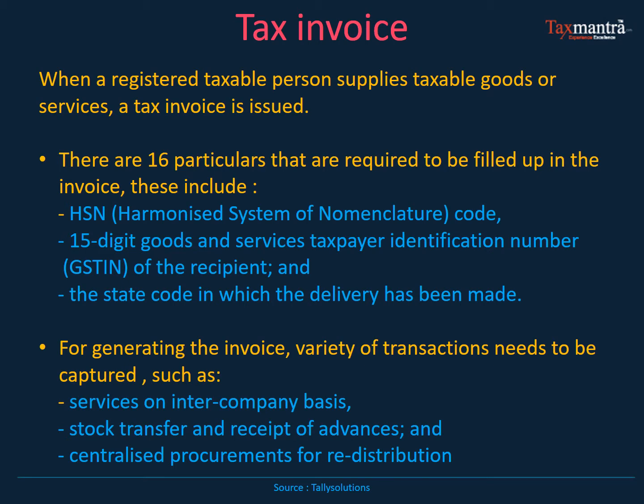Some of these particulars include the HSN number, 15-digit code, and service tax identification number, as well as the state code for generating the invoice. A variety of transactions need to be captured, such as services on an intercompany basis, stock transfer and receipt of advances, and centralized procurement for redistribution.